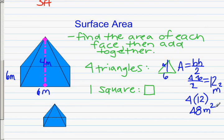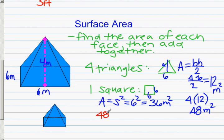And then the square, we have a square base of 6 by 6. The area of a square is the side length squared, which is 6 squared, and that's 36 meters squared. So to find the total surface area, we're going to sum that up. We're going to get our 48 meters squared plus our 36 meters squared, and that will give us our total surface area.